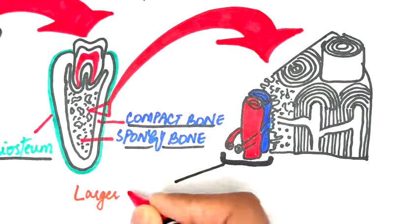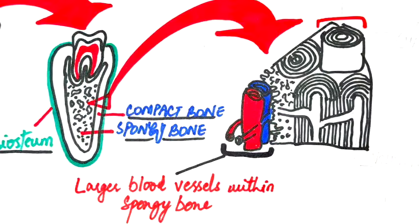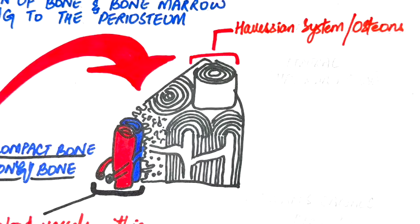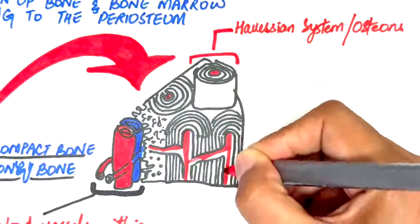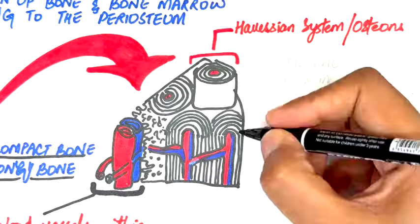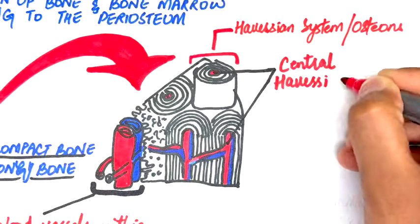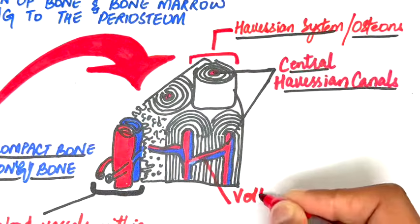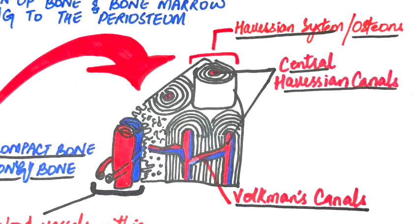These small vessels reach the haversian systems within the compact bone. The haversian systems, also known as osteons, are the fundamental structural units of the compact bone. Each haversian system contains a central haversian canal which houses an artery at its center. Smaller branches from this central artery extend into the Volkmann's canals, which connect different haversian systems within the compact bone, linking them to both the bone's inner marrow space and the outer periosteum. Understanding this complex vascular network is vital for grasping how an infection can spread from spongy bone to compact bone and then to the periosteum.